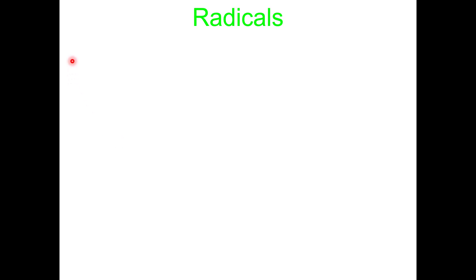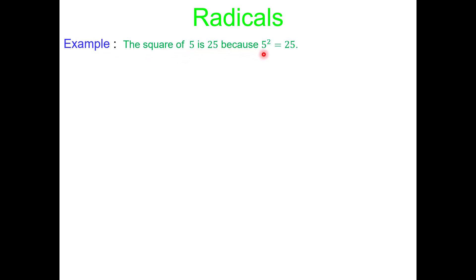Hey everyone, in this video we are talking about radicals. So the square root of 5 is 25 because 5 squared equals 25. What does this have to do with radicals? Let's see.